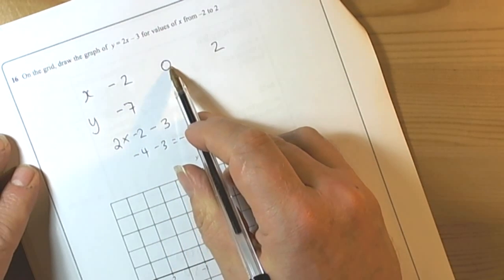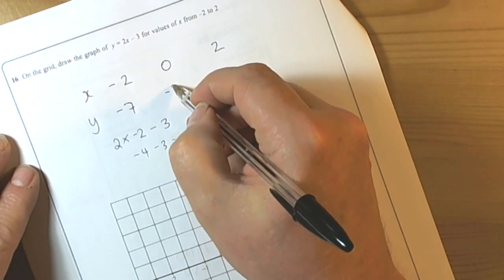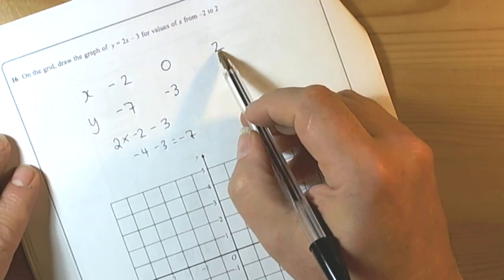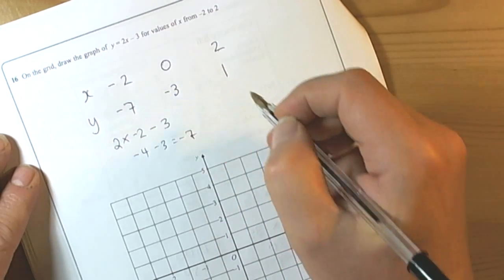If we put 0 in, 2 times 0 is 0, take away 3 is negative 3. And if we put the 2 in, 2 times 2 is 4, take away the 3 is 1.